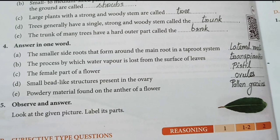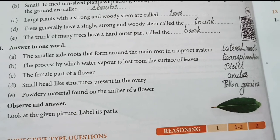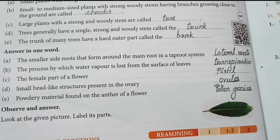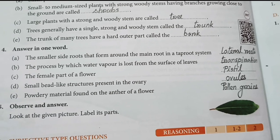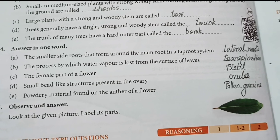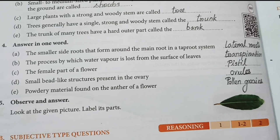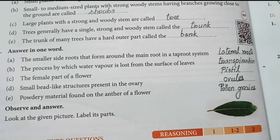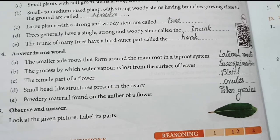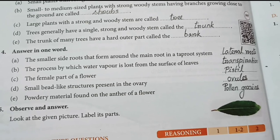Number four: Answer in one word. (a) The smaller side roots that form around the main root in a tap root system — lateral roots. (b) Process by which water vapor is lost from the surface of leaves — transpiration. (c) The female part of a flower — pistil. (d) Small bead-like structures present in the ovary — ovules. (e) Powdery material found on the anther of a flower — pollen grains.